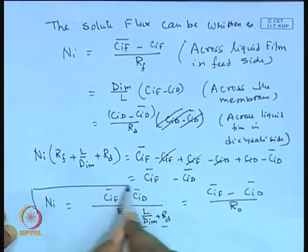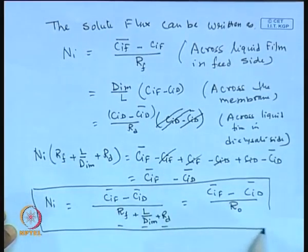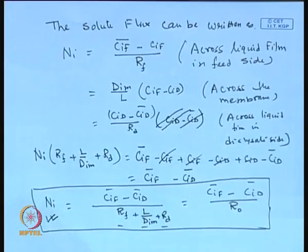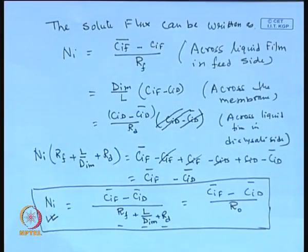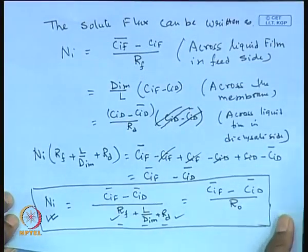Estimating the transmembrane solute flux is extremely important in design. If your target is to remove a certain amount of solute (in kg per hour, for example), you can determine the membrane area required to serve that purpose. Now let us go through in more detail how to estimate the film resistances on the feed side and dialyzate side, as well as the resistance through the membrane.